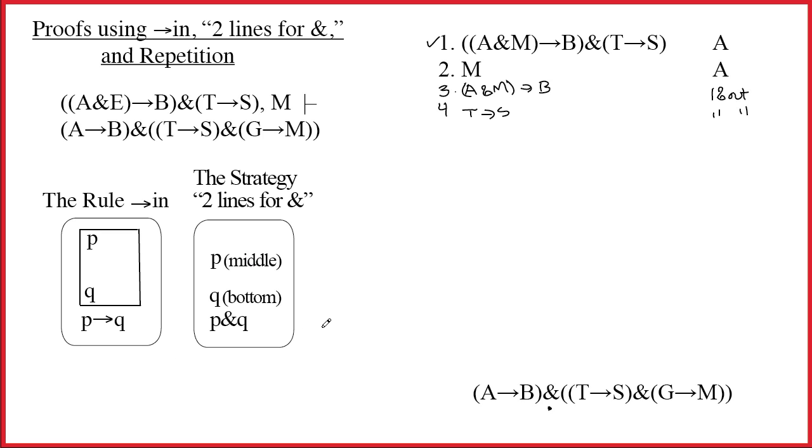What we're trying to do is build a method that will tell us look at the main connective, and here's what you ought to do. If this had been an arrow, we would make a box and do arrow in. But since it's an ampersand, life is even simpler. All we have to do is break this up into the two pieces that we will need to prove, namely A arrow B, everything in front of the ampersand, and then T arrow S ampersand G arrow M on the bottom. First one in the middle, second one in the bottom.